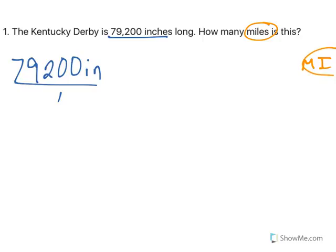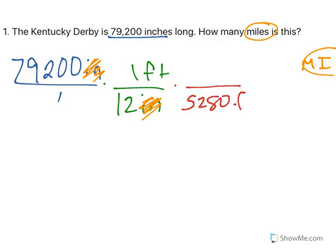I don't know how many inches are in a mile, but I know that there are 12 inches in one foot. And remember, we want inches on the top, inches on the bottom. They'll cancel out top to bottom. Well, now that I have feet,